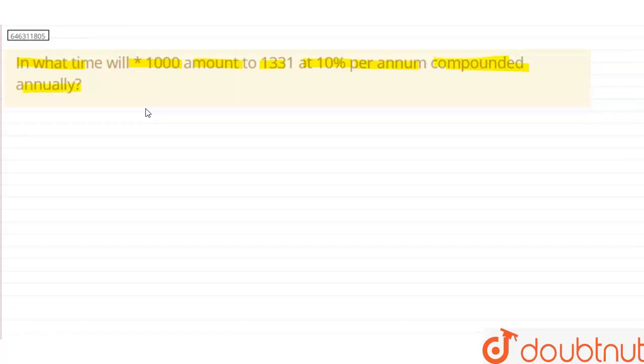So, here it is written compounded annually, which means we have to apply the compound interest formula, right? We know that the compound interest formula is: amount equals principal times 1 plus rate divided by 100 to the power n.